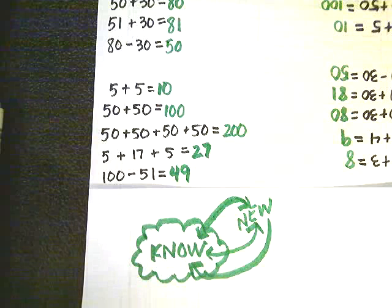Finally, we have 100 minus 51. Well, I know that 100 minus 50 is 50, based on what we've done up here. If I'm taking one more away, that means I'll have one less in my final answer. So that would be 49.